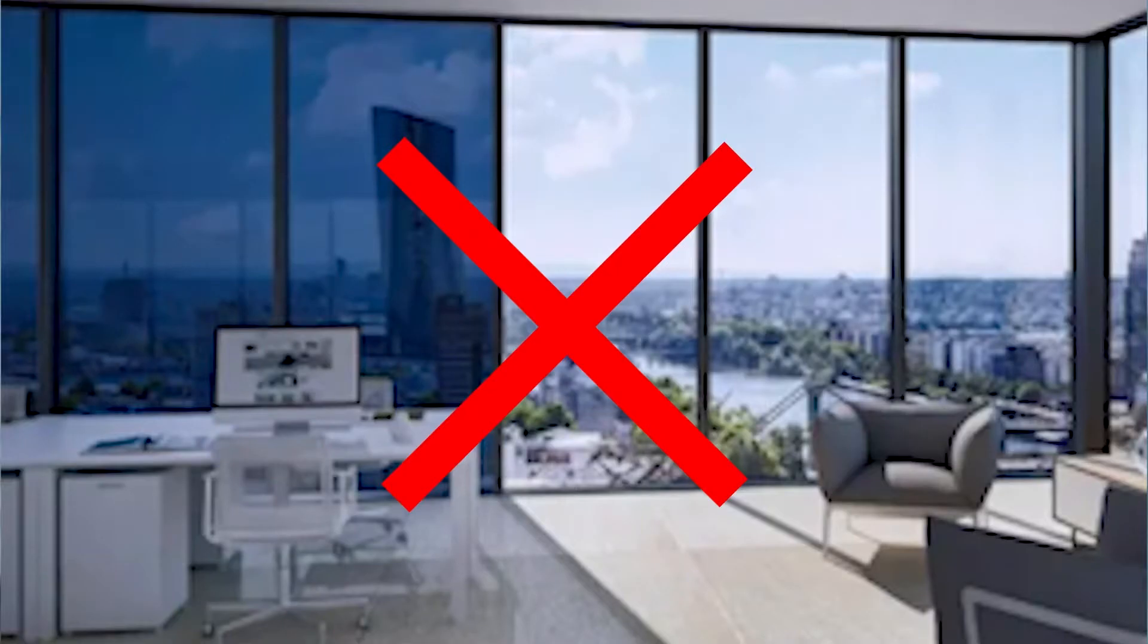However, smart glass cannot go from clear to black or from clear to colored. Smart glass and film are sometimes confused with electrochromic glass, a different product that goes from clear to dark but does not provide instant privacy. It can take up to 15 minutes to go dark.